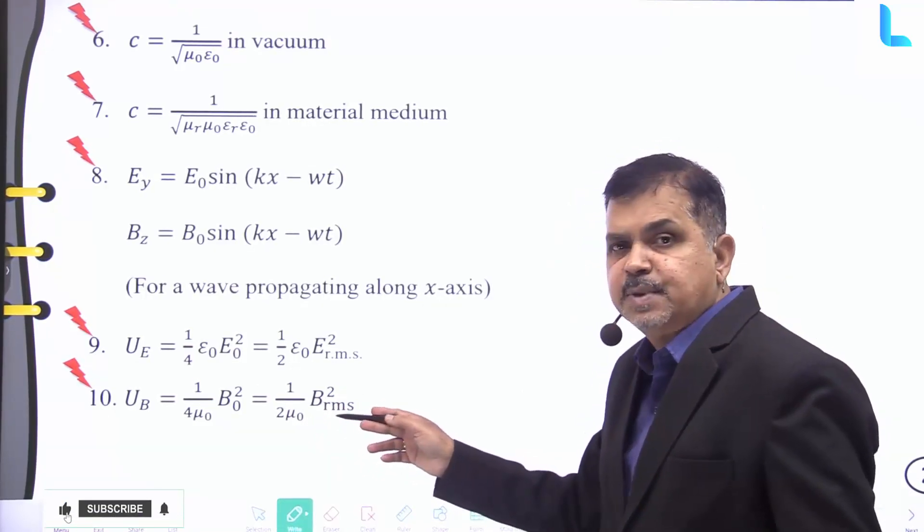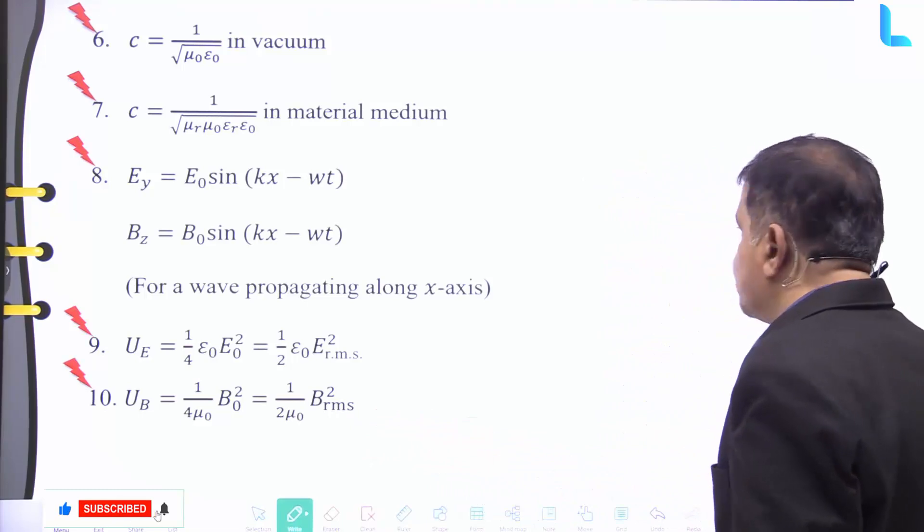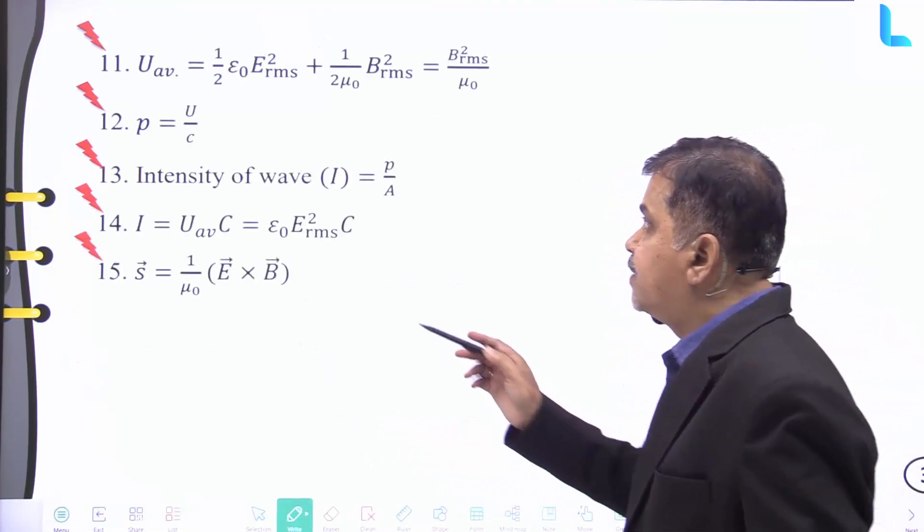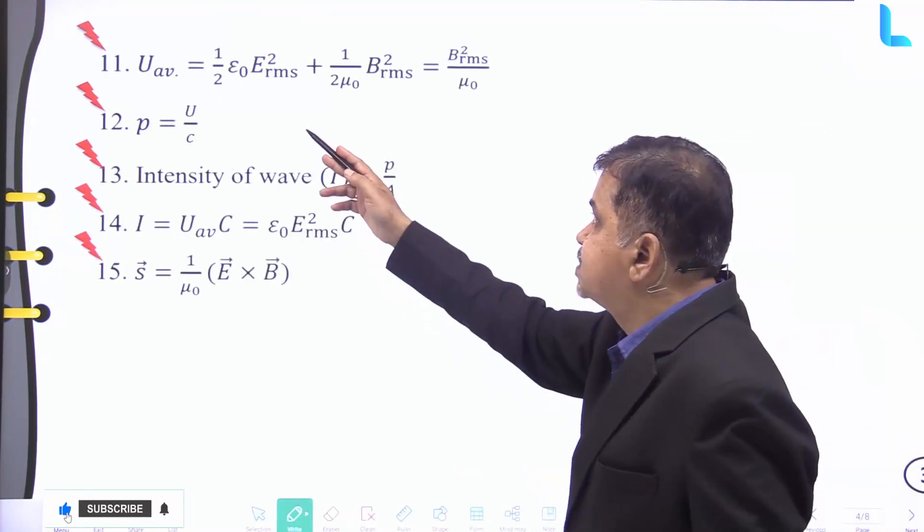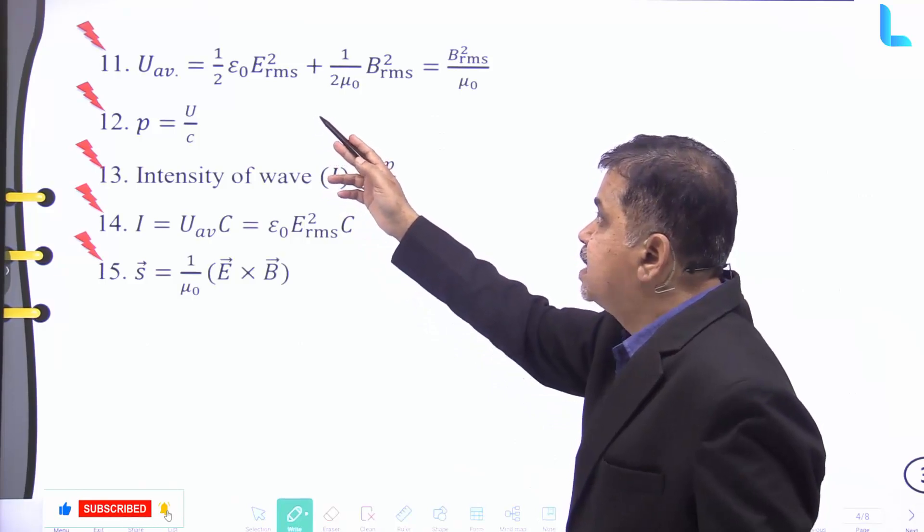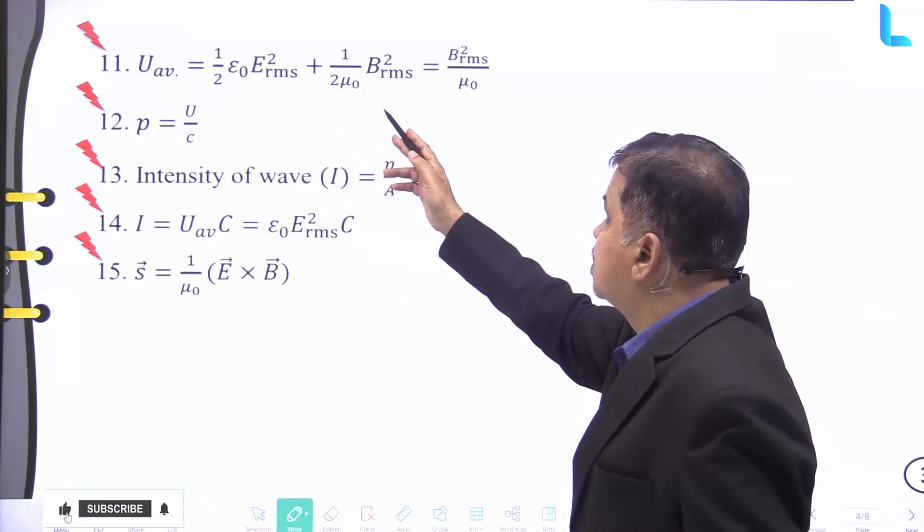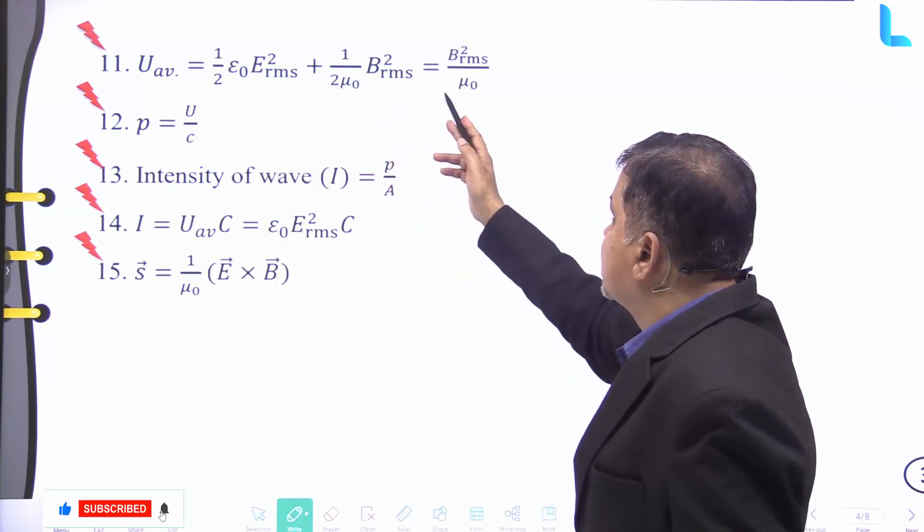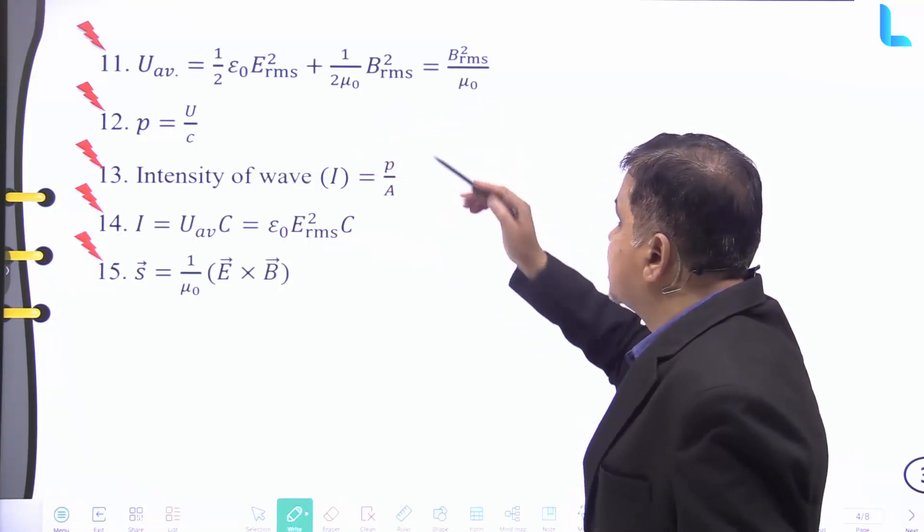U average is given by half into ε₀ Erms square plus 1 by 2μ₀ Brms square equal to Brms whole square divided by μ₀.